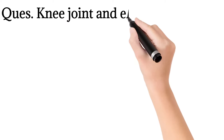5. Knee joint and elbow joints are examples of: saddle joint, ball and socket joint, pivot joint, or hinge joint.